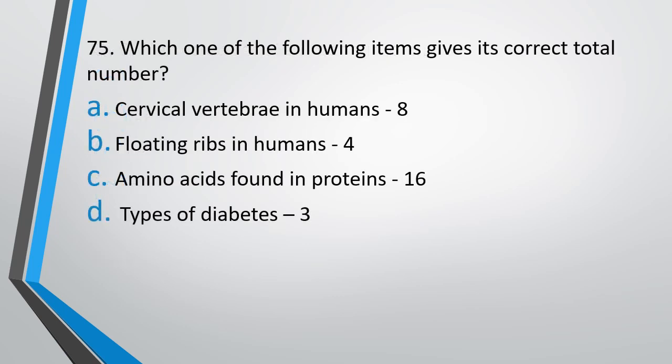Question number 75. Which of the following items give its correct total number? Cervical vertebrae in humans, floating ribs in humans 4, amino acids found in protein 16, or types of diabetes 3. The correct answer is option B. Floating ribs in humans are 4 in number.